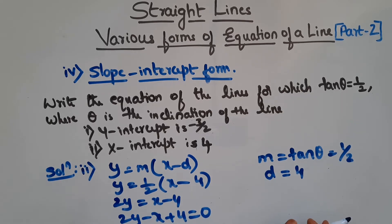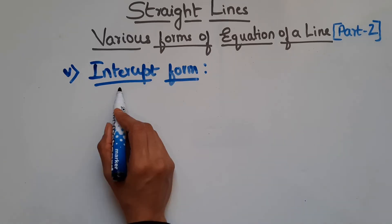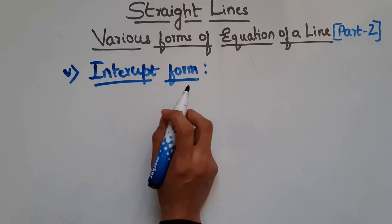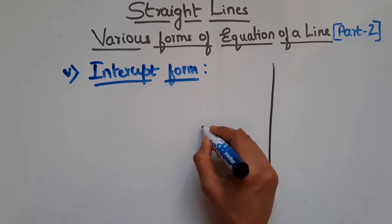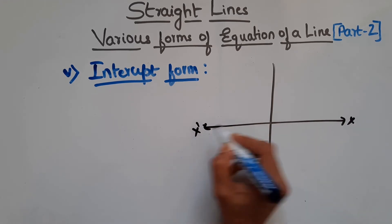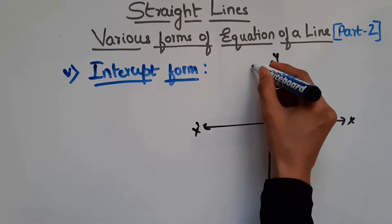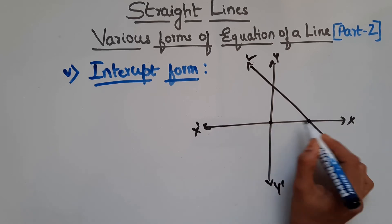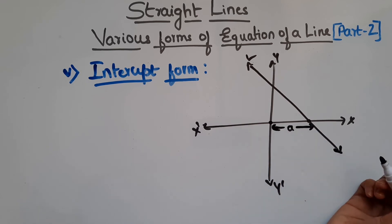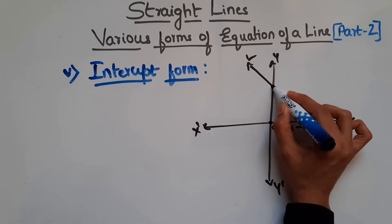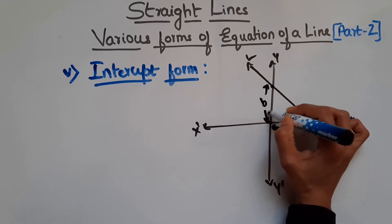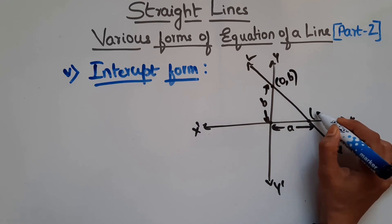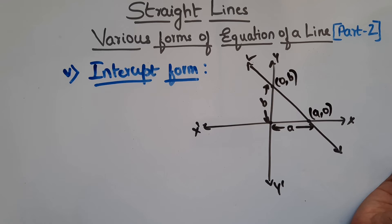I hope this is clear. Now let us move on to the fifth form — intercept form. In this type, two intercepts are given: x and y intercept of a line. So when two intercepts are given, how do we find the equation of a line? Let us take the x-axis and y-axis and consider a line L. The distance from origin to where the line cuts the x-axis is a — the x-intercept — and from origin to where it cuts the y-axis is b — the y-intercept. So this point is (0, b) and this point is (a, 0).